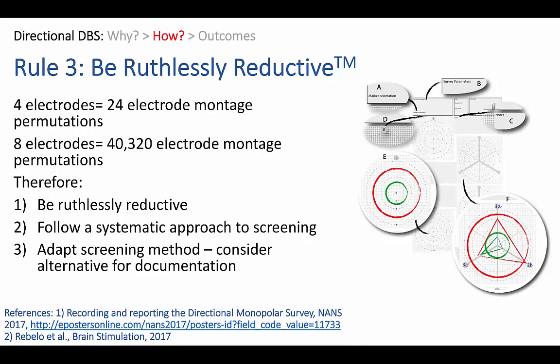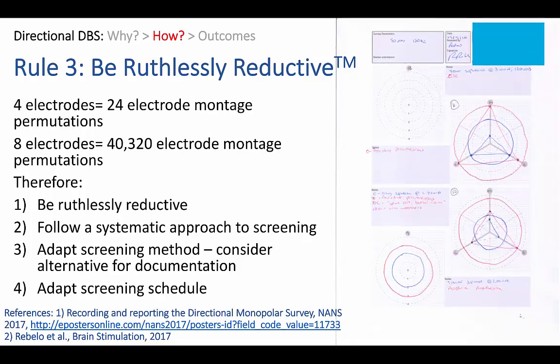You may need to adapt your screening method — we've written on this in our paper. We tend to document side effects very consistently: the red line on these graphs is the first sustained side effect, no matter how mild. You may also need to adapt your screening schedule. A screening schedule that works for many people is to screen omnidirectionally at the first visit, leave the best omnidirectional contact switched on, bring the patient back in a week or two, and then screen those three segments at that best omnidirectional level at the second screening visit.